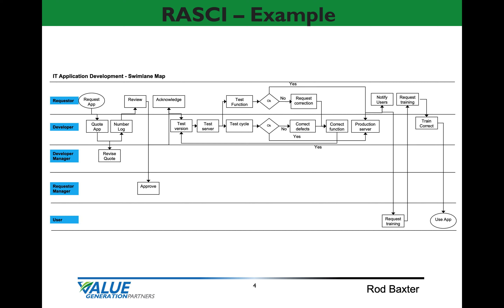Let's take a look at a swim lane map — this is what I like to use as an input to a responsibility matrix. This is a process map for IT application development, also known as a deployment flowchart. You'll notice there are five positions or functions: a requester, a developer, a developer manager, a requester manager, and an end user, along with several activities or process steps throughout. What we would do is take this swim lane map and transfer this information onto a responsibility matrix.